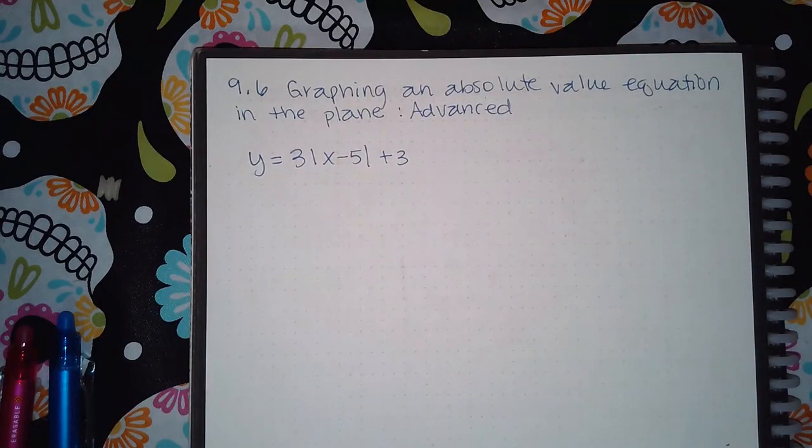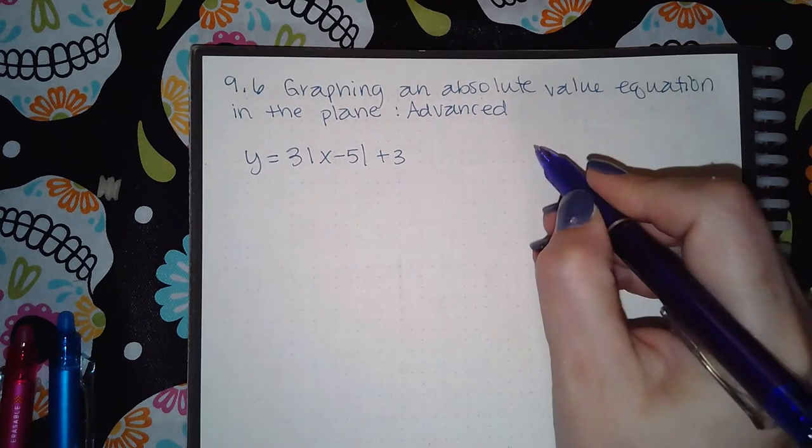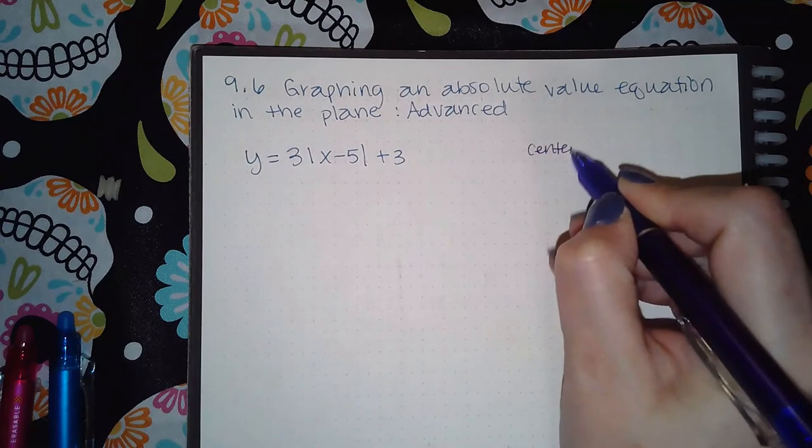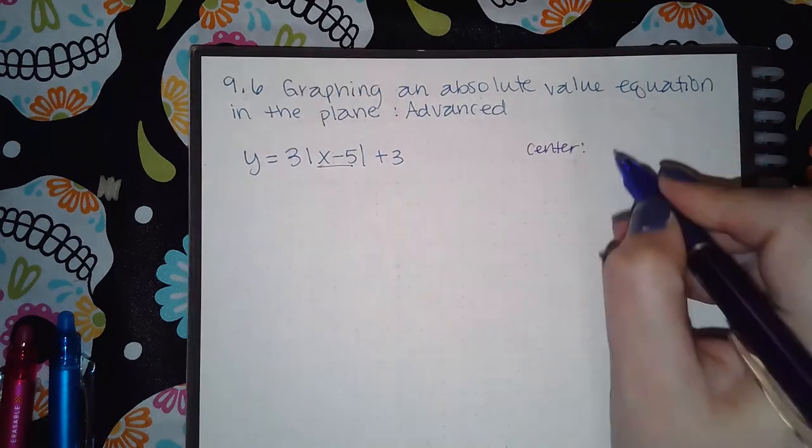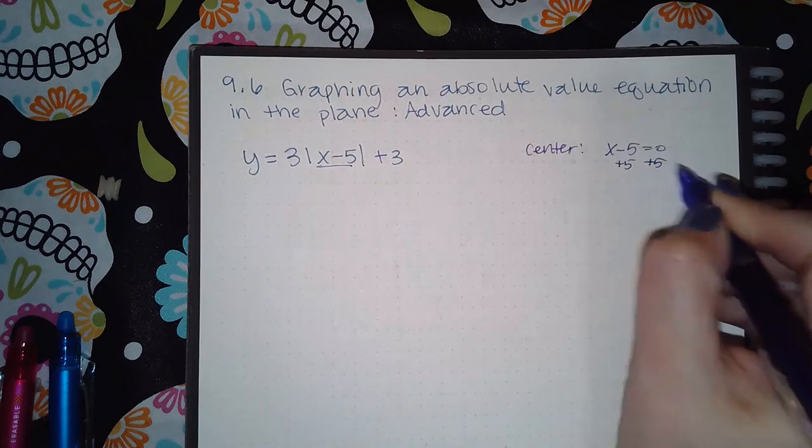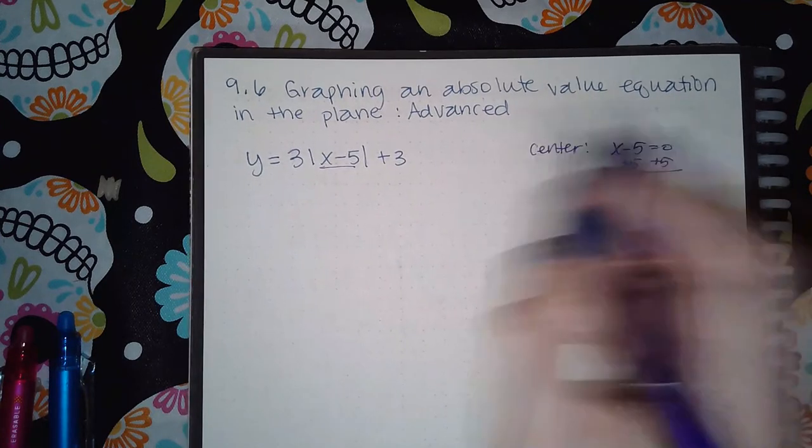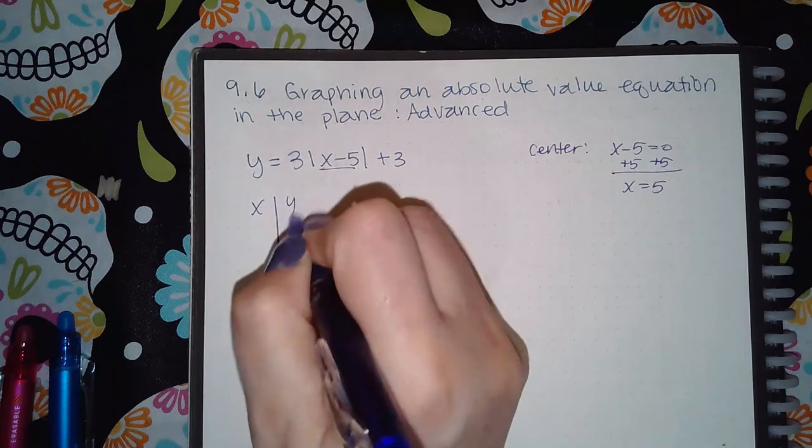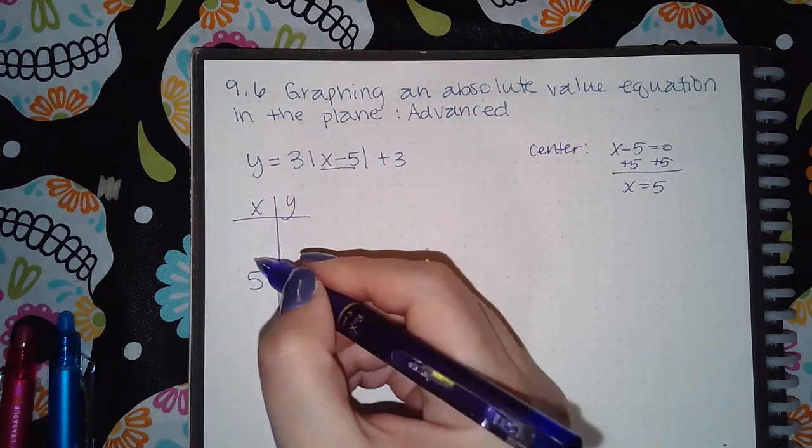Here we have 9.6, graphing an absolute value equation in the plane, advanced. Same thing I'm doing before: I'm going to find the center by taking what's on the inside of the bars, equaling it to zero and solving. Then I'm going to create my table with five in the center and two values